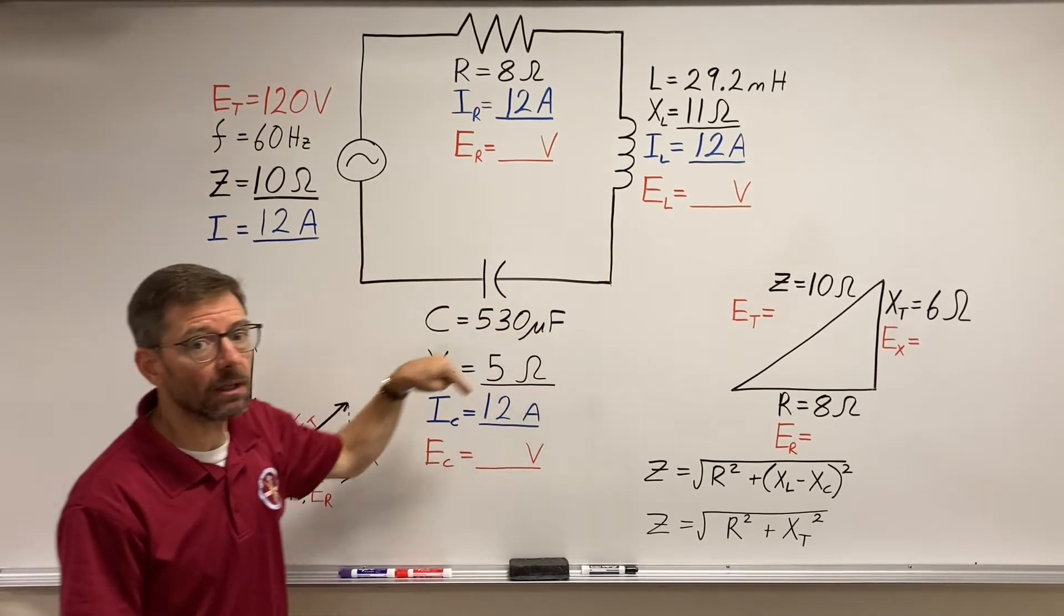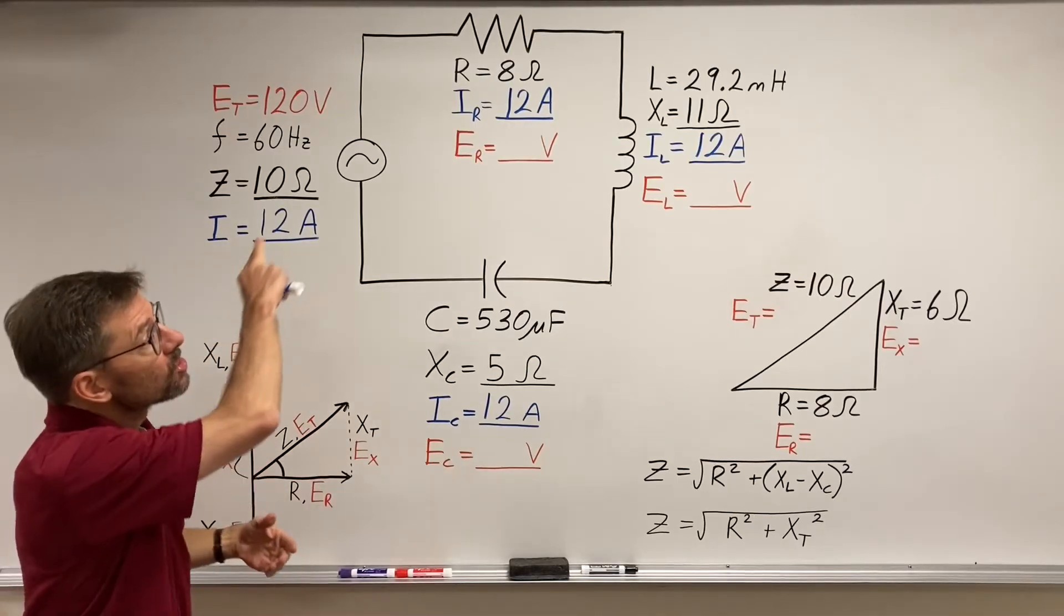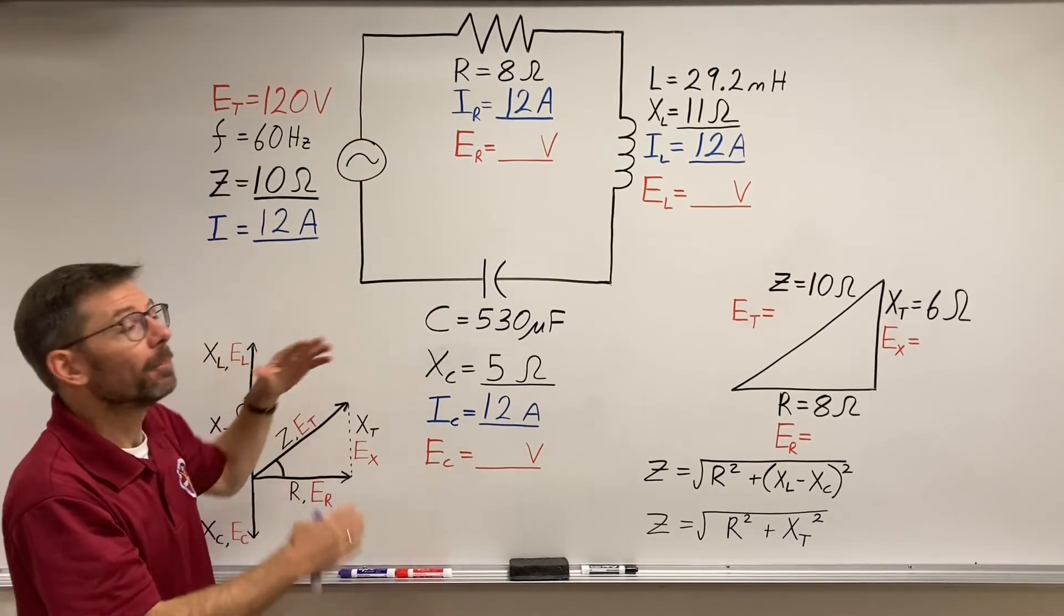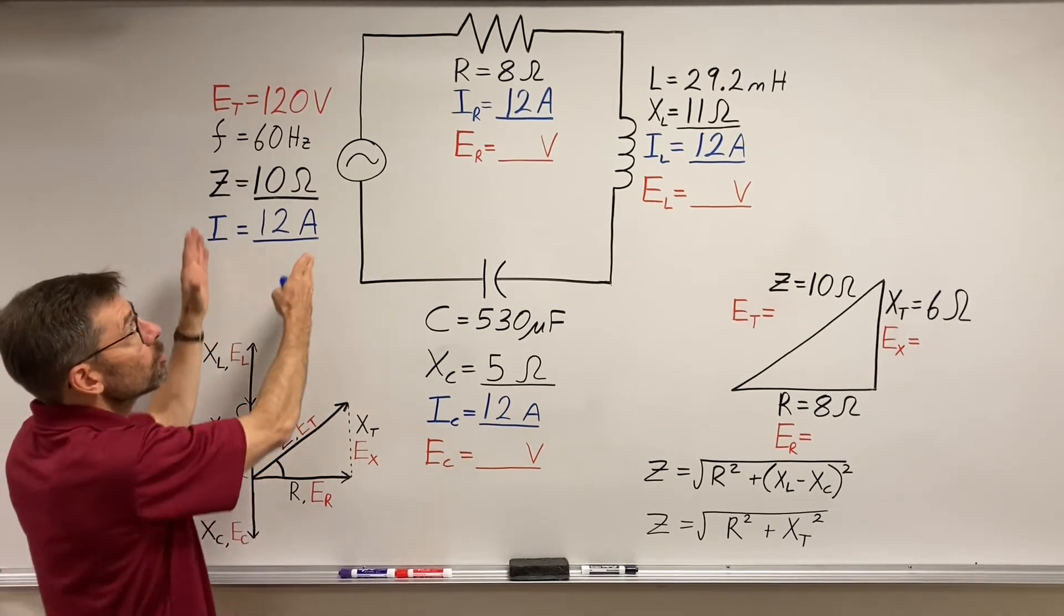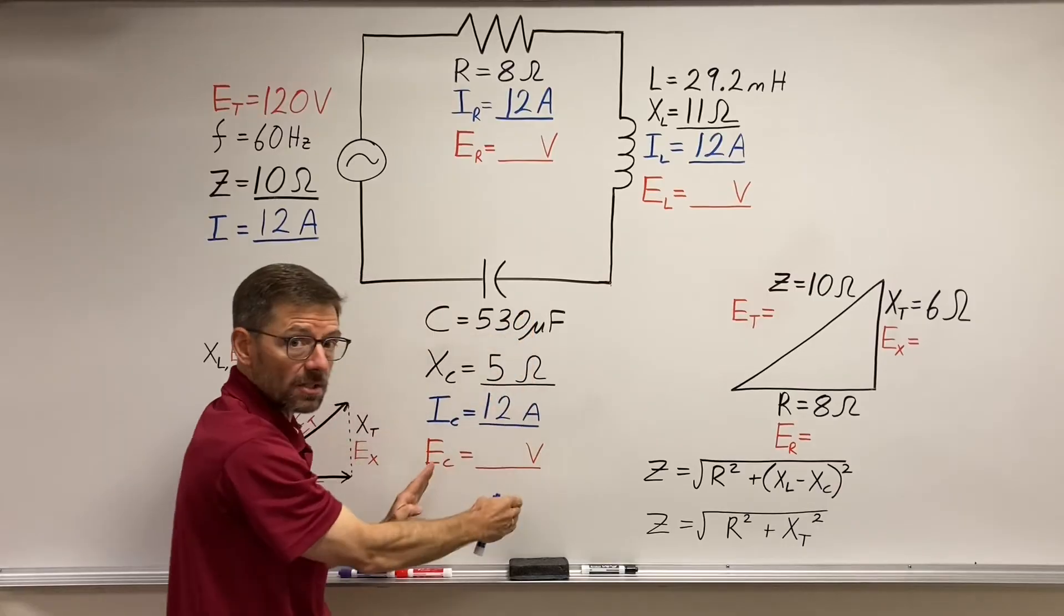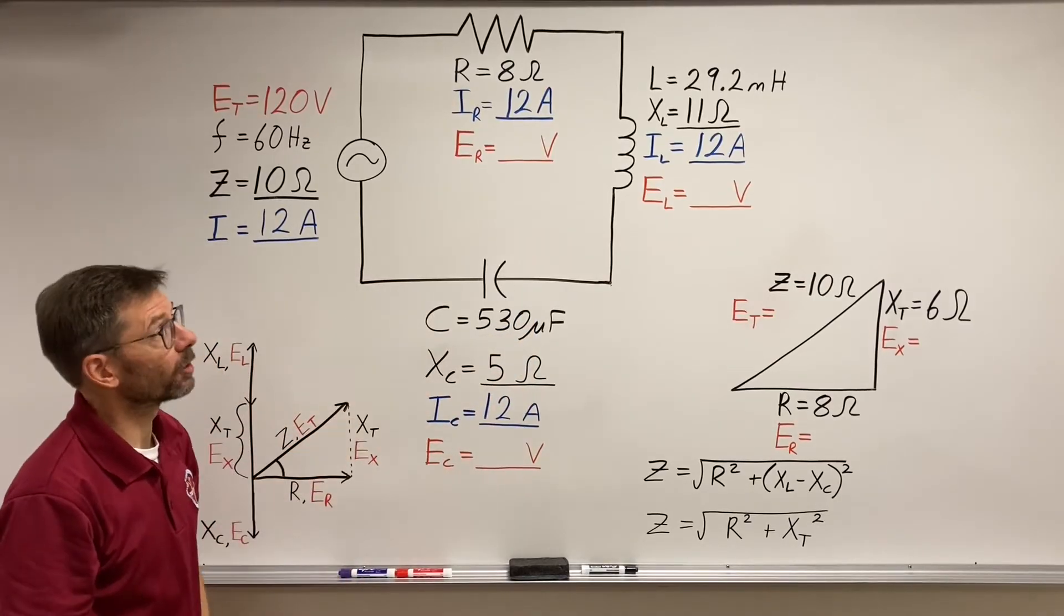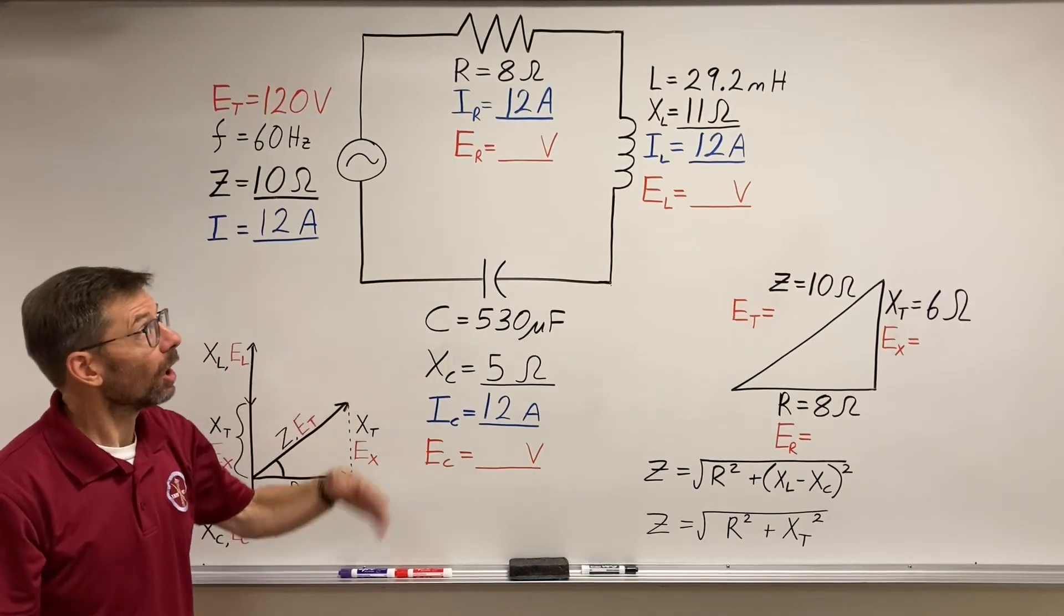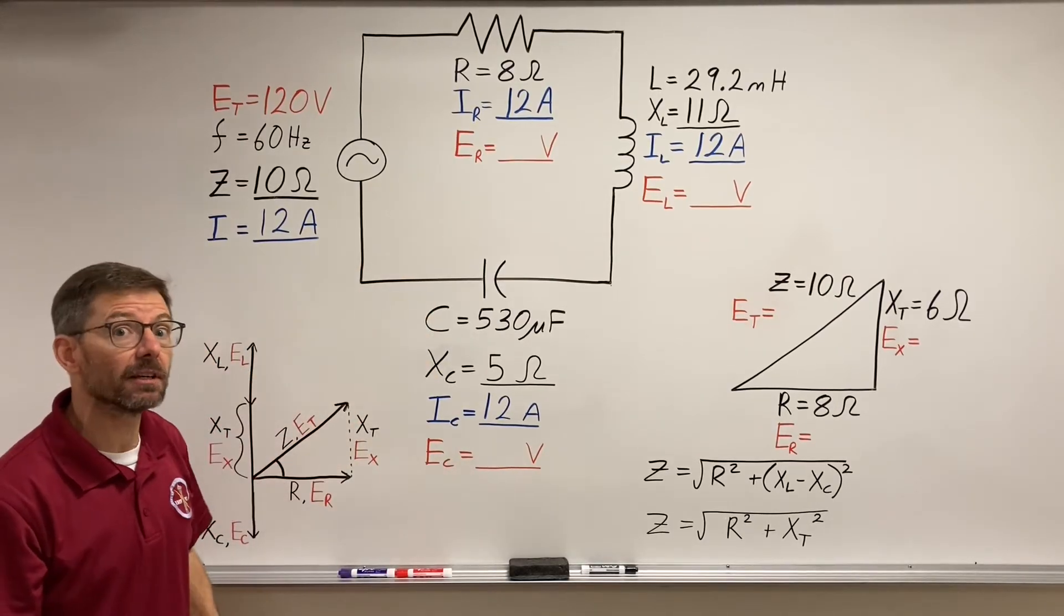And why did I write the 12 everywhere? Series circuit, same current everywhere. So I didn't necessarily need to, but it makes it easier for me because I can use Ohm's law within any specific component to get my further values. As we're going to bump into right now and get our voltages, our voltage drops on these various components.